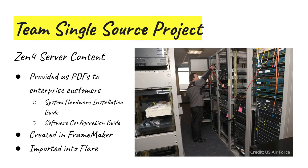The content you'll be working with is about an enterprise class server called Zen4. The existing Zen4 content was delivered to customers — for example, the US Air Force — as two PDFs: a system hardware installation guide supporting installation of the physical server, and a software configuration guide to support configuration when ready to get the server running. It would be wise to start becoming familiar with this content by scanning the PDFs, which you'll find in the single source project assignment in Canvas. The project files you'll work with in Flare were created by importing two book files from unstructured FrameMaker. Importing into Flare is a complicated process, so it wasn't possible to have you do it yourselves given the project timeline. The Flare files are found in all of the single source assignments on Canvas.